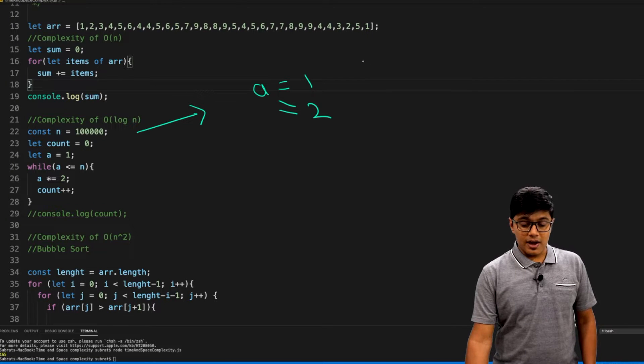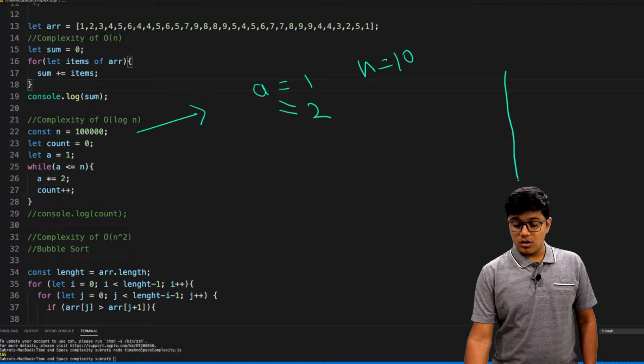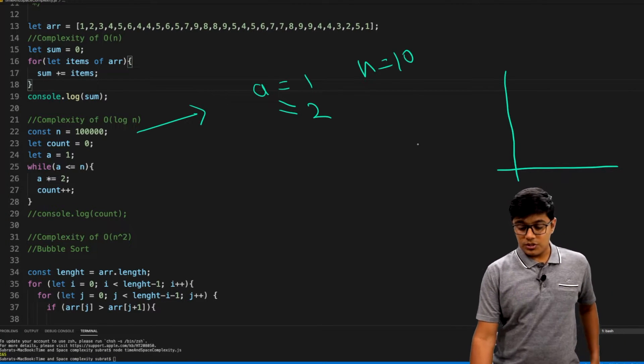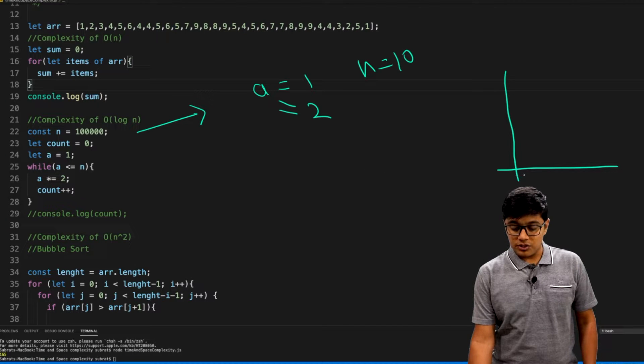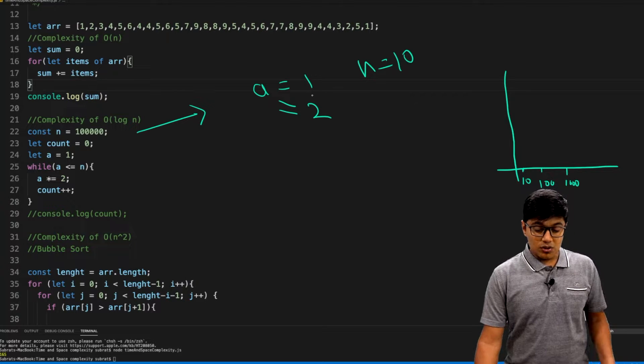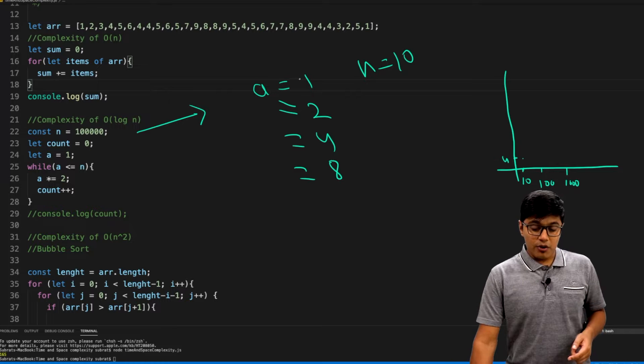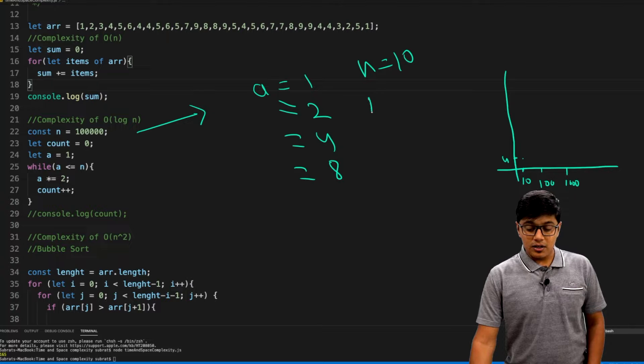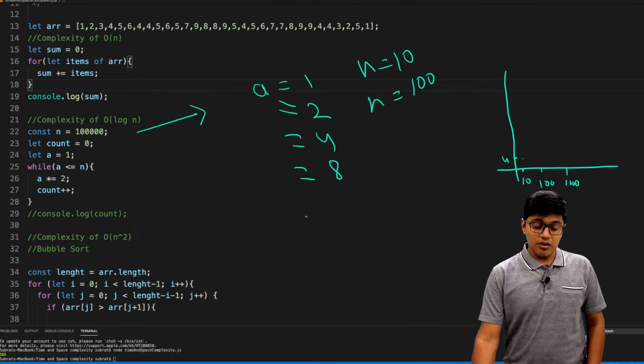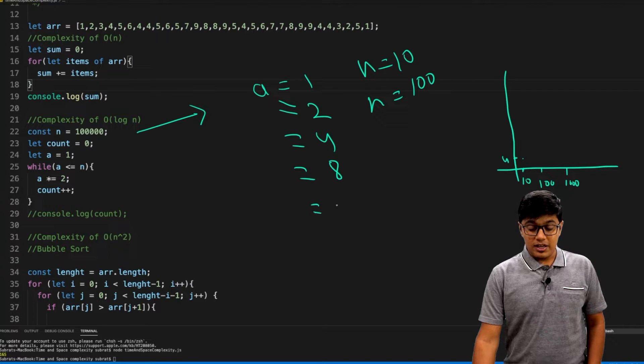As I already told you, I have assigned a equals to 1. In the first iteration, a becomes 2. Suppose n here is 100. I will try to draw the graph here. Suppose we start with n equals to 10. For n equals to 10, how many steps do we need?